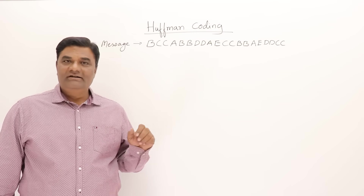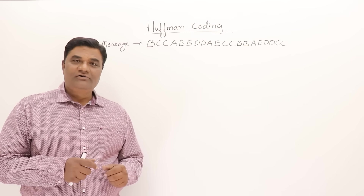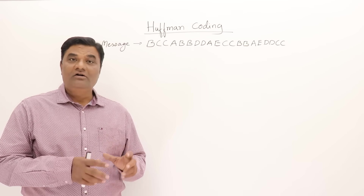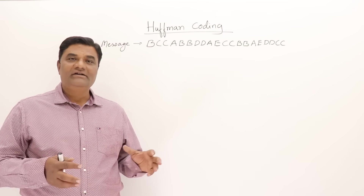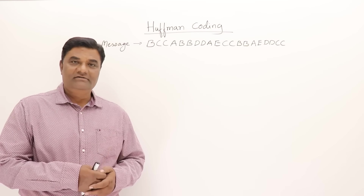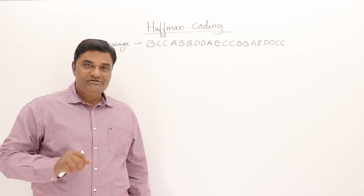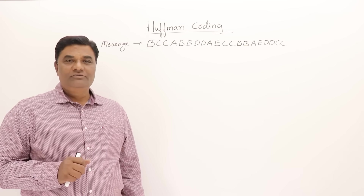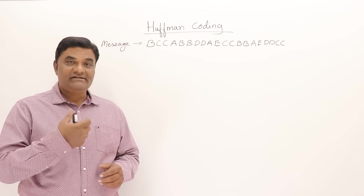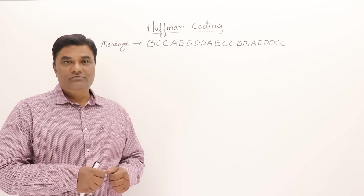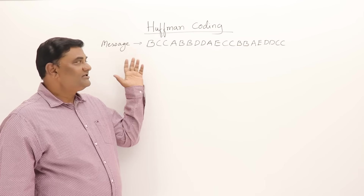The topic is Huffman coding. Huffman coding is a compression technique used for reducing the size of data or a message. Suppose you want to store data in a file — you can store it in compressed form to reduce the file size. When data is sent over a network, it can be compressed to reduce the cost of transmission. In this video, I'll explain fixed-size encoding and then variable-size encoding, which is Huffman coding.